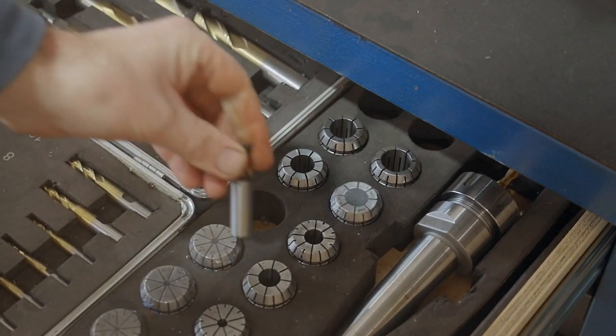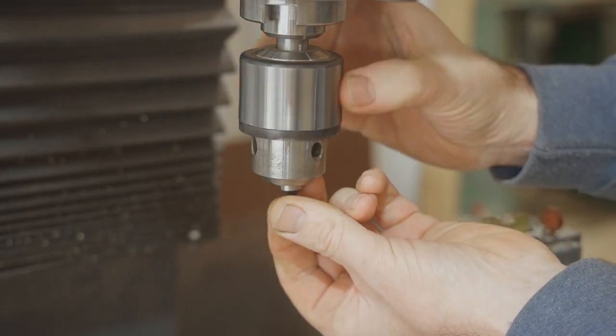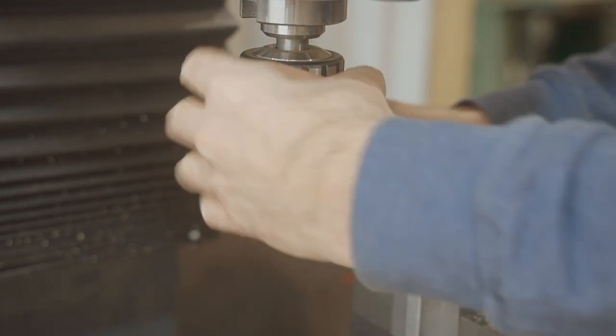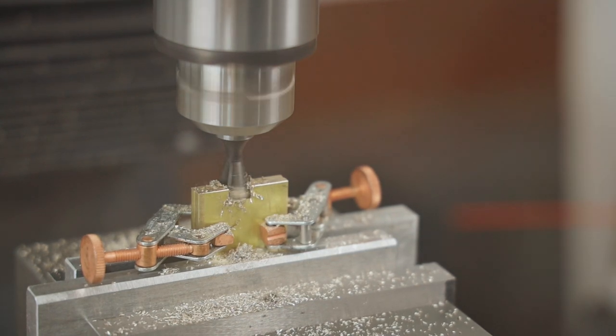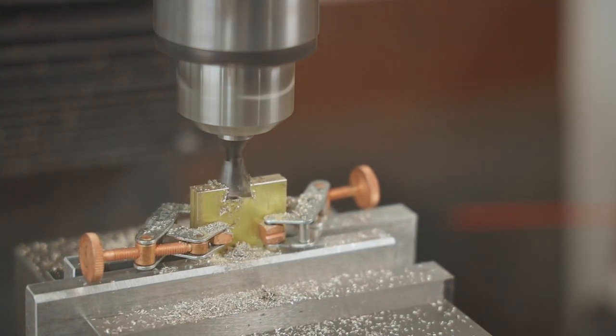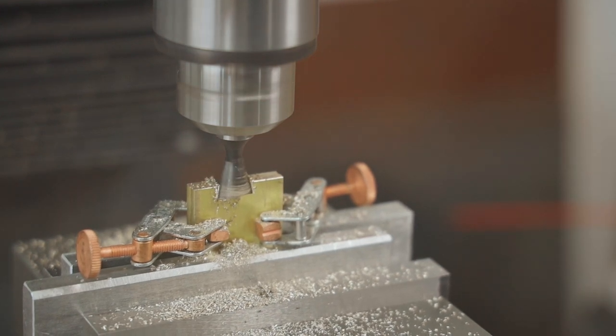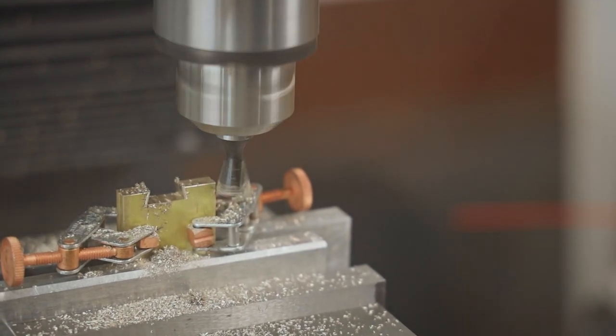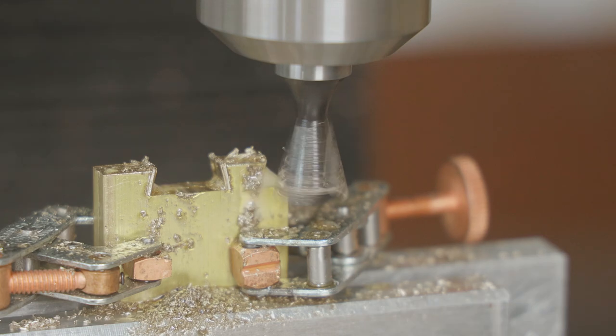I don't have a collet that will hold a half inch shank router bit so I'll have to use a drill chuck instead. I know it's not ideal but it'll have to do. I have ordered a collet for future use though. I went very slowly but it worked on the brass no worries at all.